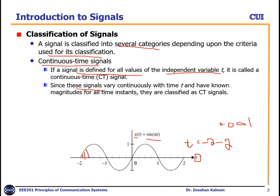Since these signals vary continuously with time t and have known magnitudes for all time instants, they are classified as continuous time signals. As you can see from this picture, for each value of time t there are magnitudes corresponding to each value of time t. So this is called a continuous time signal.